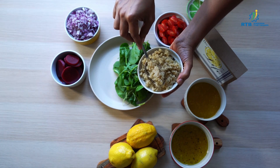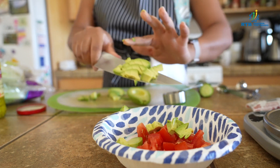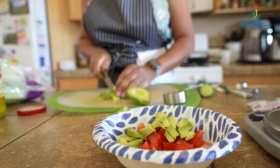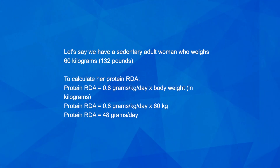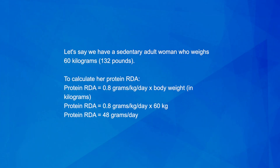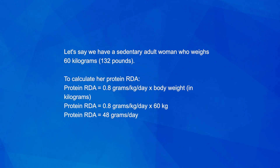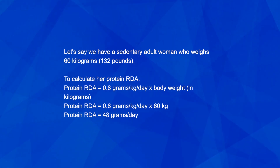Calculating nutrient serving sizes involves considering age, physical activity, weight goals, and health conditions. These factors determine individual nutritional needs, ensuring optimal health and well-being. For example, a sedentary adult woman weighs 60 kg (132 lbs). To calculate her protein RDA: Protein RDA = 0.8 g/kg per day × body weight in kilograms = 0.8 g/kg per day × 60 kg = 48 g per day.